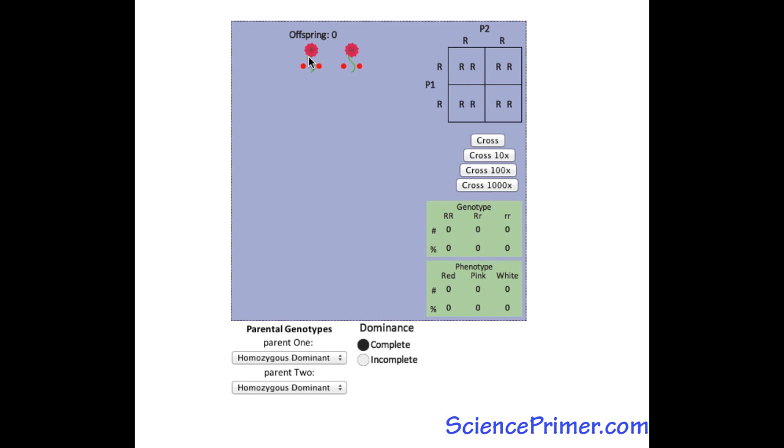Depending upon the patterns of dominance, two or three phenotypes are possible: red, pink, or white flowers.